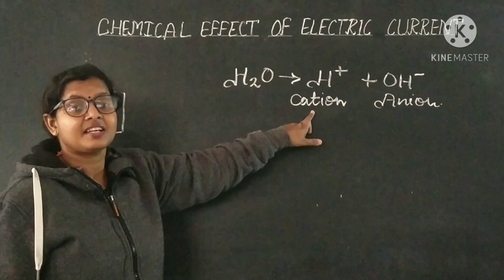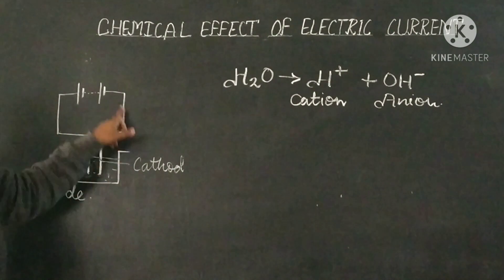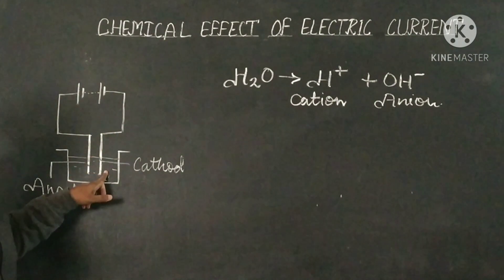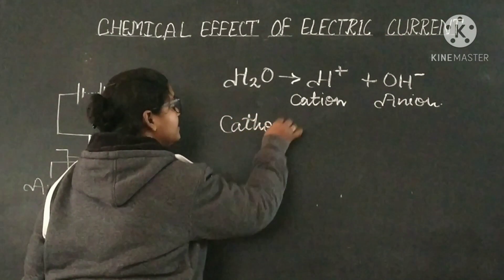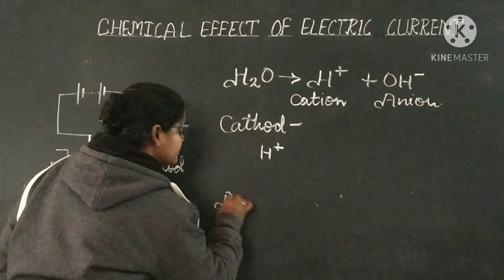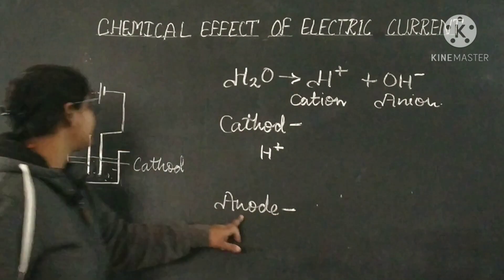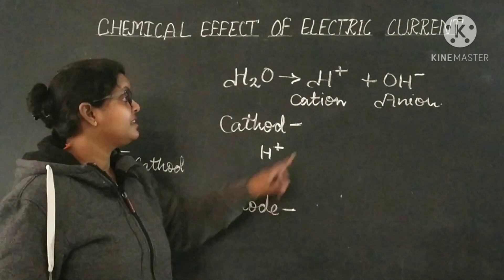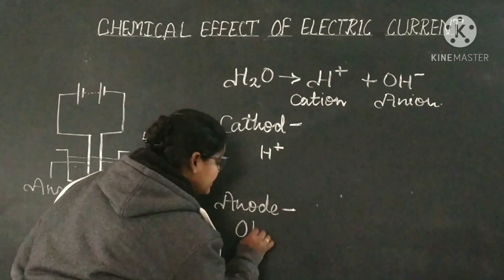Cations move to the cathode, because cations are positively charged and the cathode is connected to the negative terminal of the battery — opposite charges attract. The electrode connected to the negative terminal is the cathode. Anions move to the anode, because the anode is connected to the positive terminal of the battery, and being positively charged it attracts negatively charged ions. So hydroxide ions move to the anode.